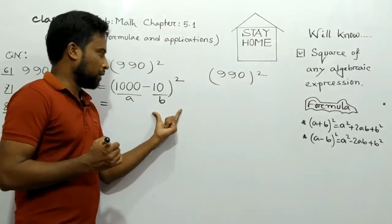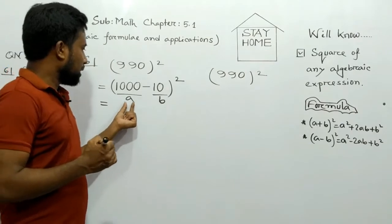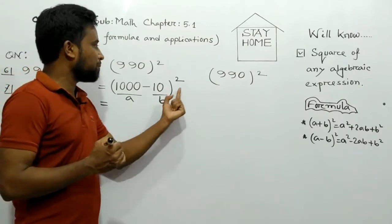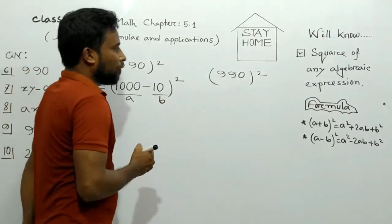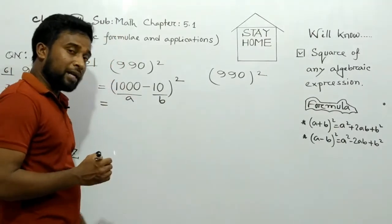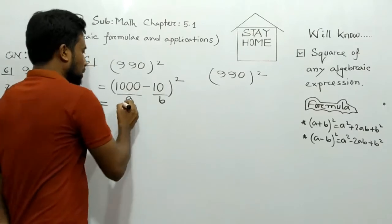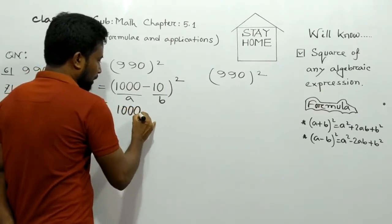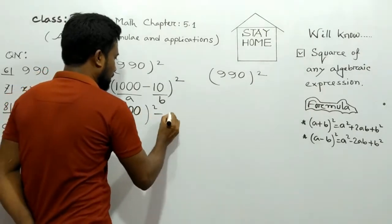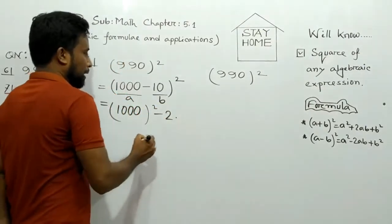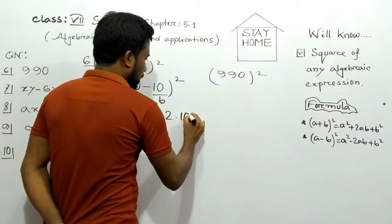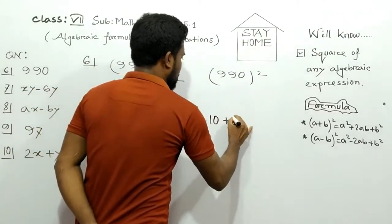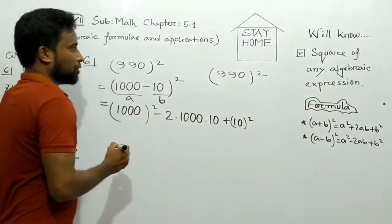We apply the (a - b)² formula: a² - 2ab + b². So a² means 1000², minus 2 times a (which is 1000) times b (which is 10), plus b² which is 10².